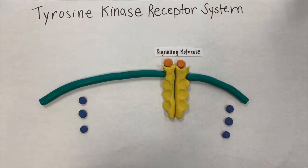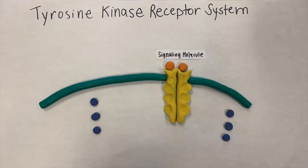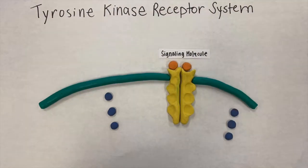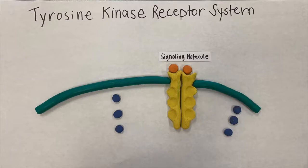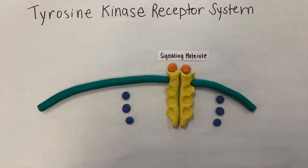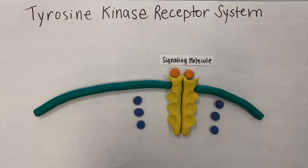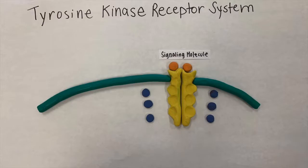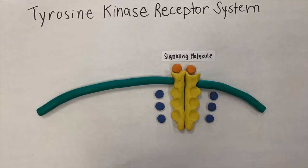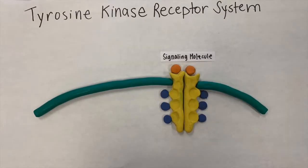After closing, the kinase takes a phosphate off of the ATP, transforming it into ADP, and then puts that phosphate onto a tyrosine. Then the kinase is fully activated.